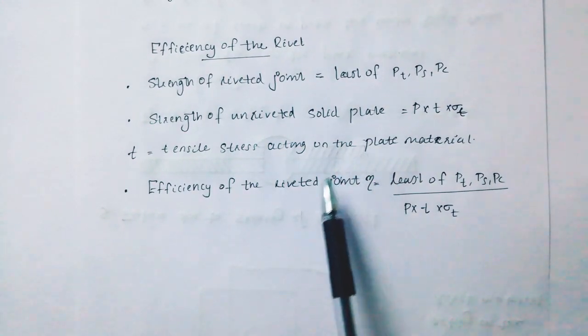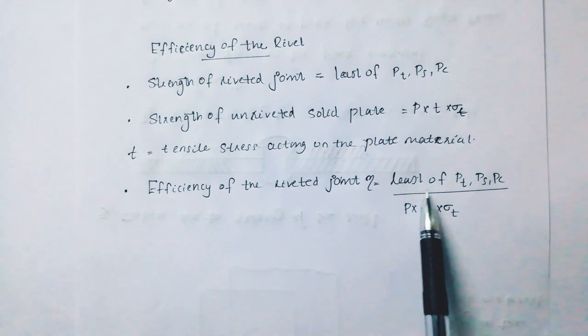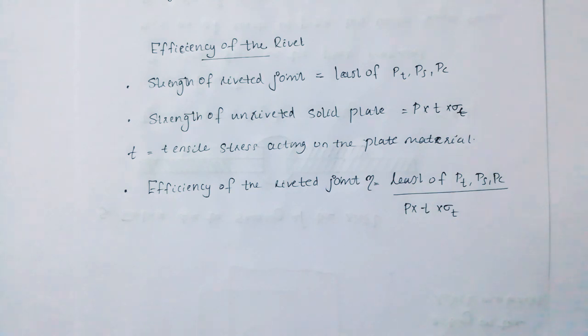Efficiency of the riveted joint equals the least of PT, PS, PC divided by P times T times sigma T. Okay friends, if you like this video, please subscribe and support. Thank you.